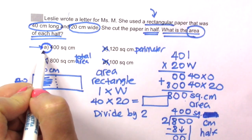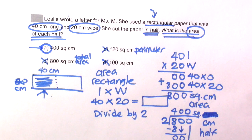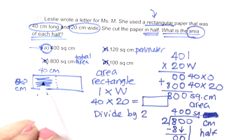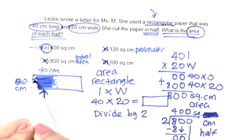And as we thought before, this is the right answer: 400 square centimeters. Why square centimeters? Because it's the area inside of a shape.